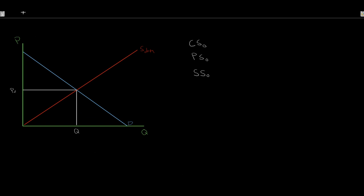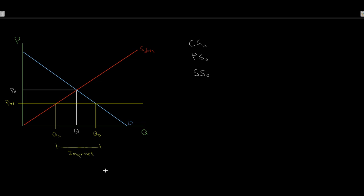Let's suppose we have a situation where the world price is lower than our domestic price. If the world price is lower, it's because they're better at producing this good — they have the comparative advantage, so we do not. In this case, we are a net importer, because our quantity demanded exceeds our quantity supplied. There's my quantity demanded, there's my quantity supplied — making us an importer of this good or service.